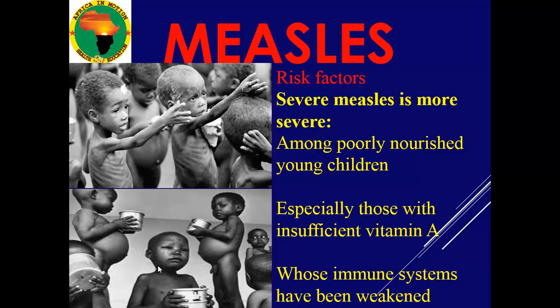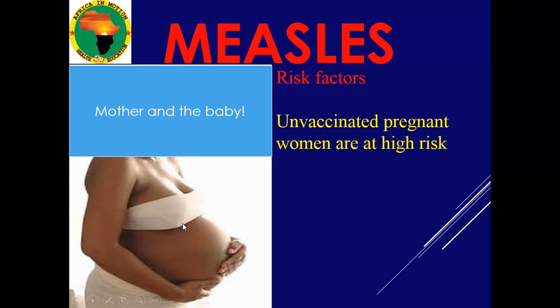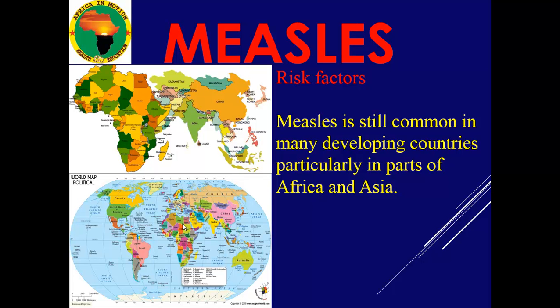Children who are malnourished — such as those with marasmus or kwashiorkor — are at risk of contracting the disease, and the complications will be very severe. Pregnant mothers and their unborn babies are at risk if they get infected and are not vaccinated. Countries that are underdeveloped are at high risk because the incidence and prevalence is higher in those regions.